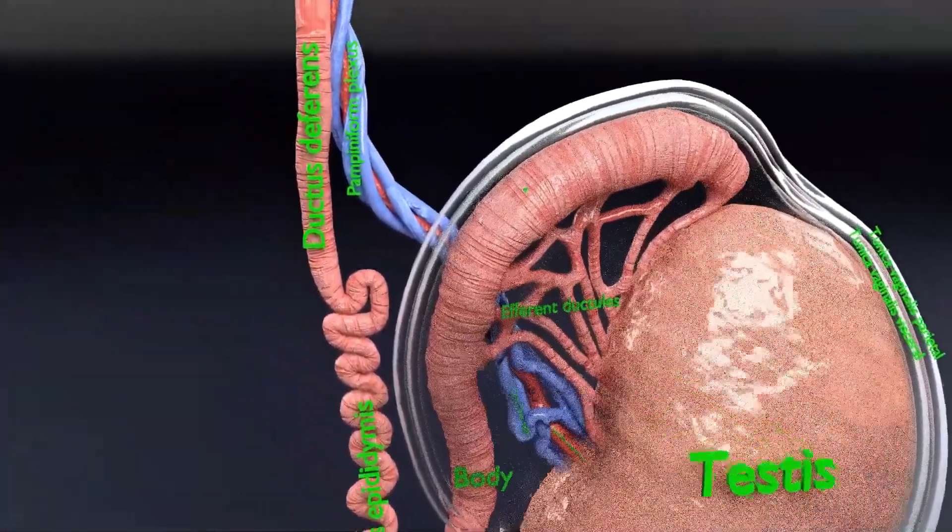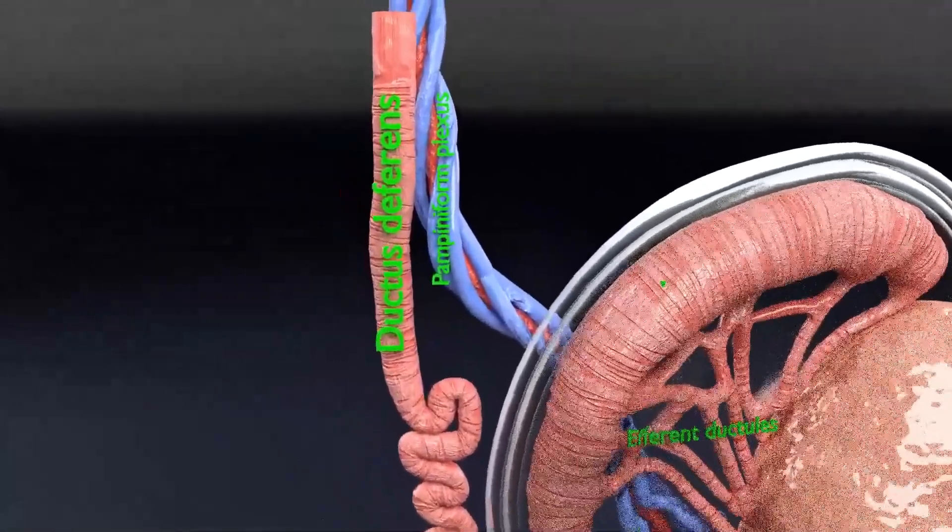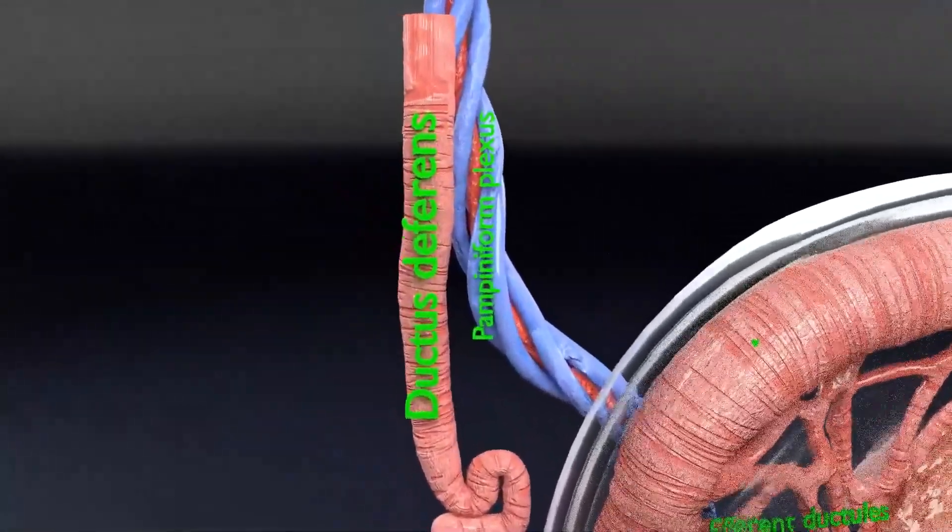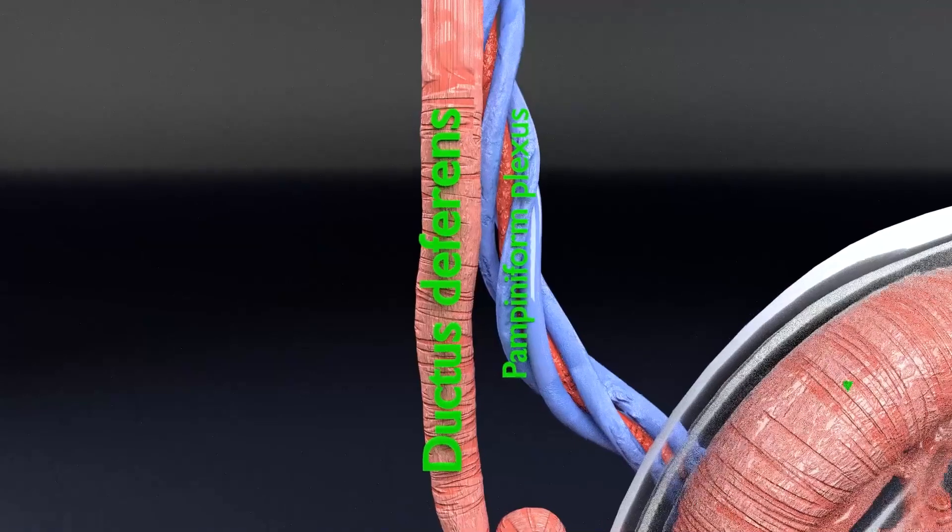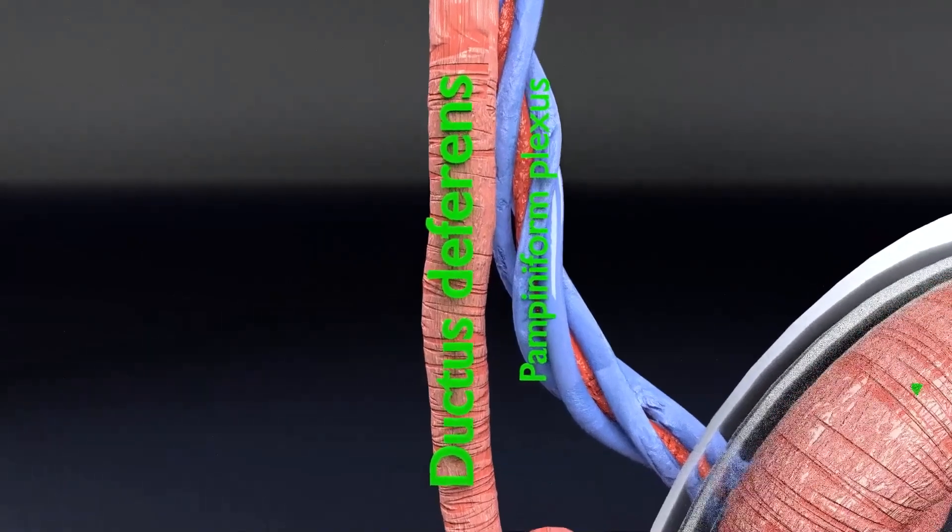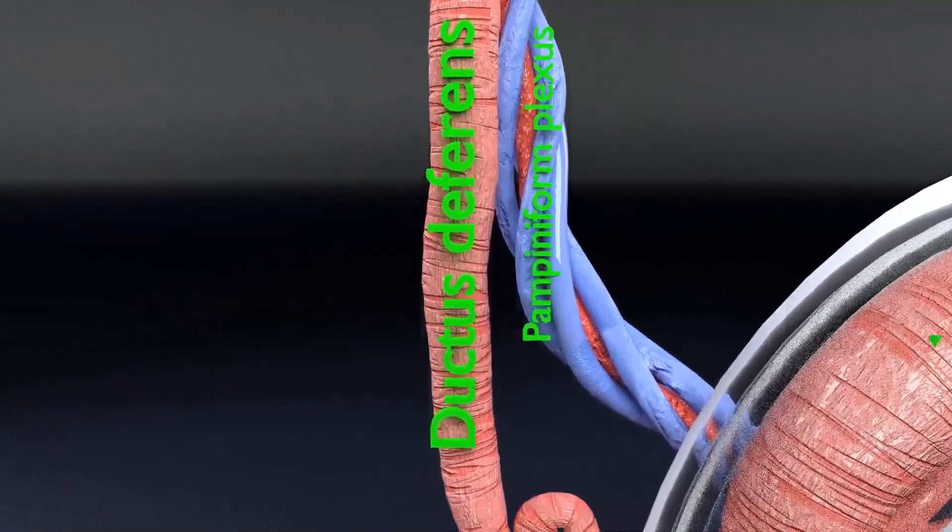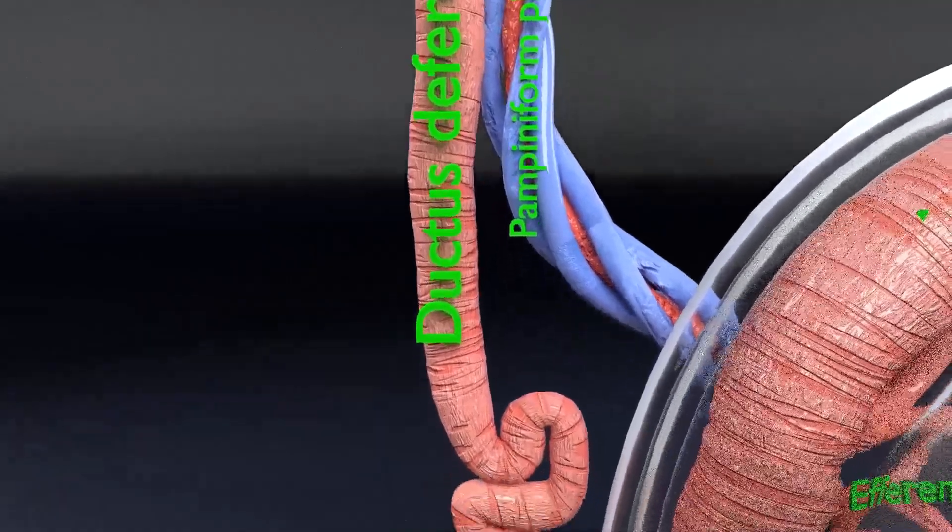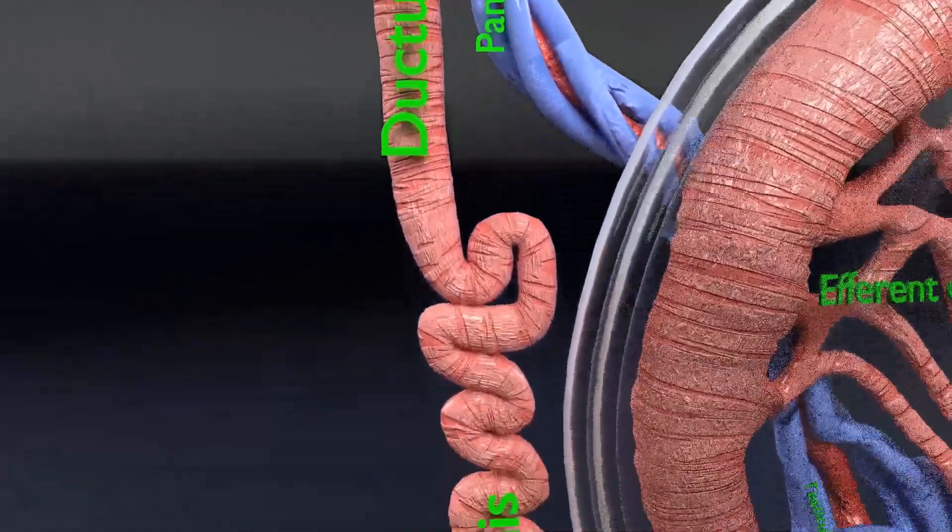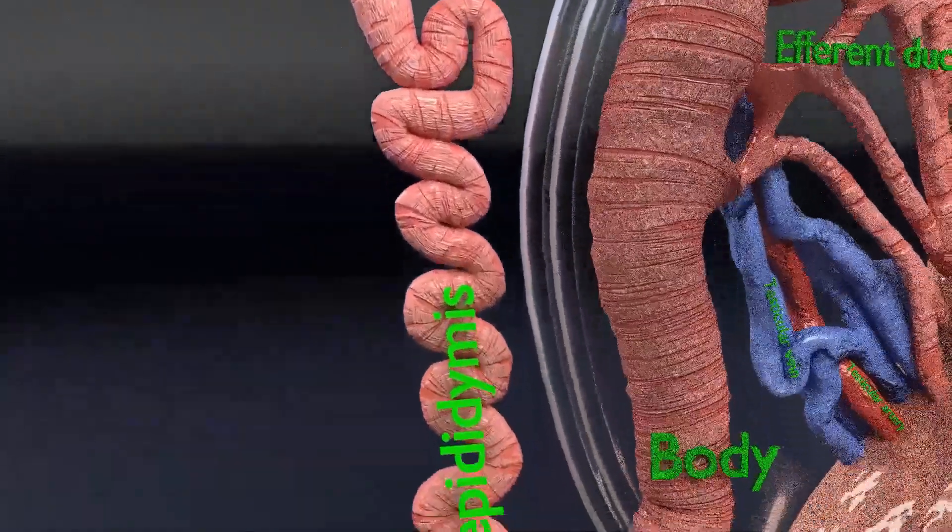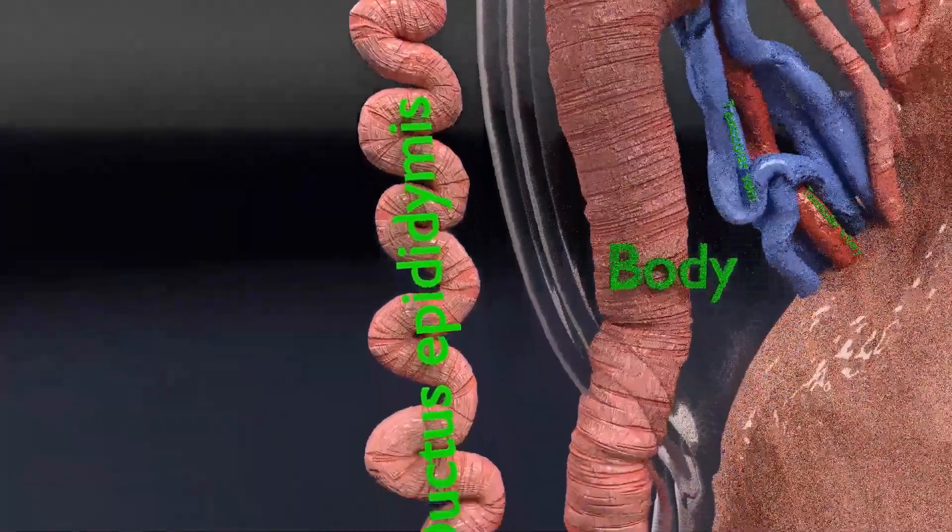Now you are able to see the ductus deferens. The ductus deferens is about 45 cm long when straightened. The ductus deferens is a thick-walled muscular tube which transmits spermatozoa from the epididymis to ejaculatory duct.